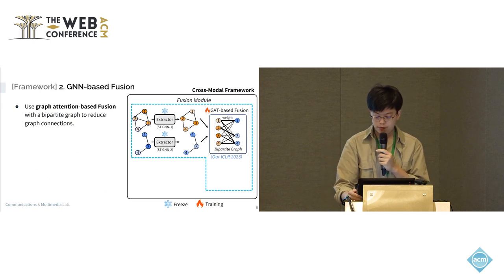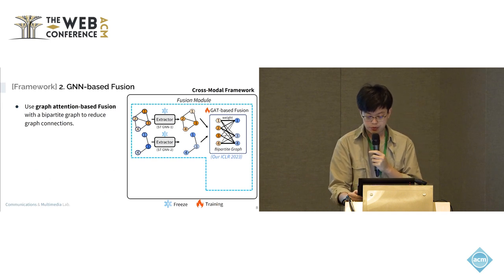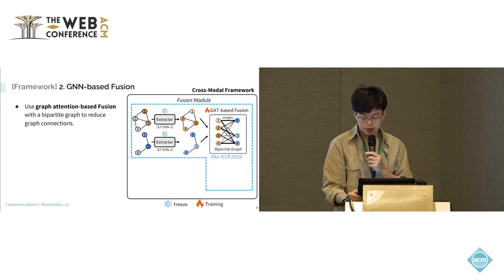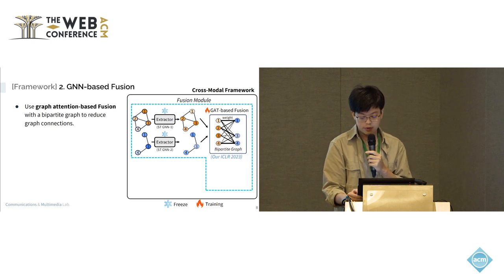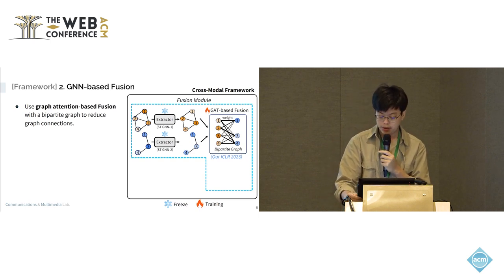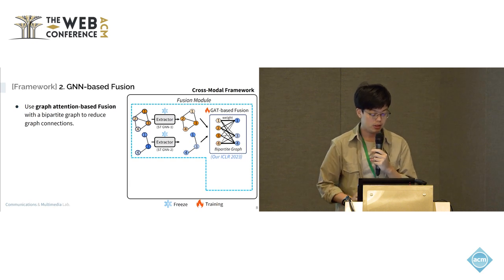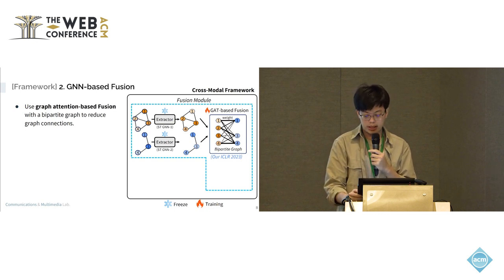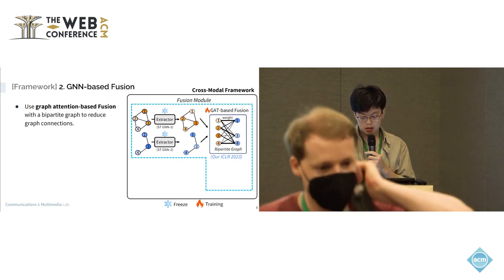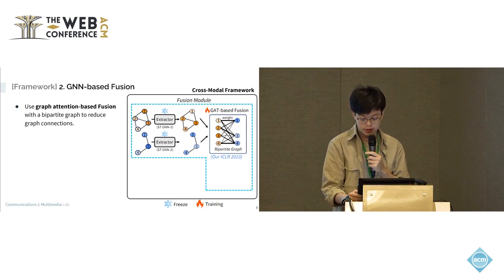We then develop a graph attention-based fusion model with a bipartite graph structure. We separate data from different modalities into two distinct sides of the bipartite graph. This ensures that data from one modality can only connect to the opposite modality, focusing on cross-modal interaction and reducing graph complexity. If we were to directly use a general graph-based fusion, the time complexity would be very large. The graph attention mechanism is based on our technique from our ICCV paper, which improves the efficiency of handling spatial-temporal data.